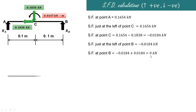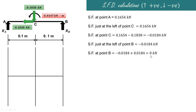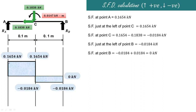Using these values we can draw the shear force diagram. At A it is 0.1654 kN, just at the left of C it is 0.1654 kN, exactly at C it is −0.0184 kN, just at the left of B it is −0.0184 kN, and exactly at B it is 0 kN. This is our shear force diagram.